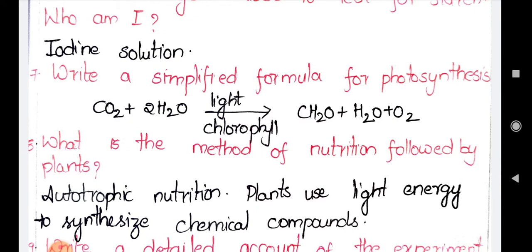What is the method of nutrition followed by plants? The nutrition is called autotrophic nutrition. Auto means self — plants are able to prepare their food materials by themselves. That's why it is called autotrophic nutrition. They prepare food material by taking light energy from the sun, converting it into chemical energy, and forming the products of glucose, while releasing oxygen and water molecules.